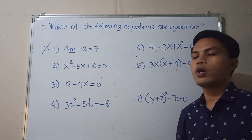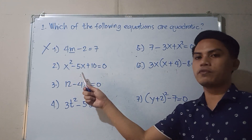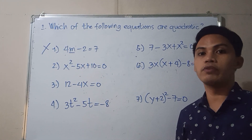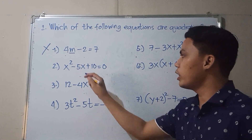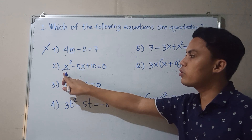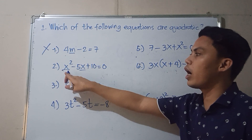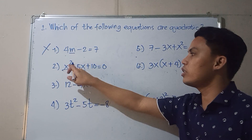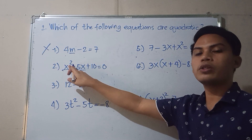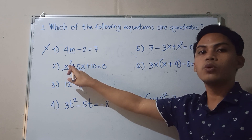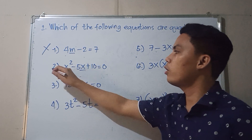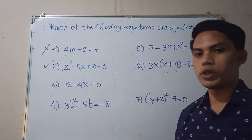How about number 2? We have x squared minus 5x plus 10 is equal to 0. Looking at the variables, there is a term where the variable x has a highest degree equal to 2. Since the degree should be equal to 2 for a quadratic equation, the second example is a quadratic equation.